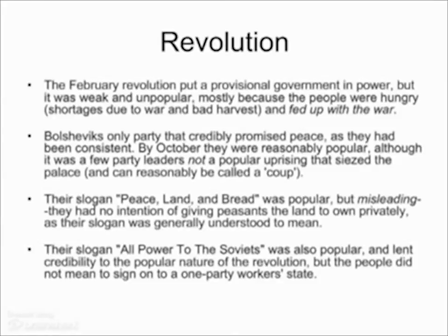The Bolsheviks' slogan 'all power to the Soviets' was also popular and lent credibility to them, because after they gained power they did pass all power to the Soviets — away from the Duma. However, they also wanted the Soviets to be under their control, to become part of their one-party workers' state. This wasn't what people had in mind — they didn't expect all other parties to be outlawed and for the Soviets to be directly under Bolshevik control.